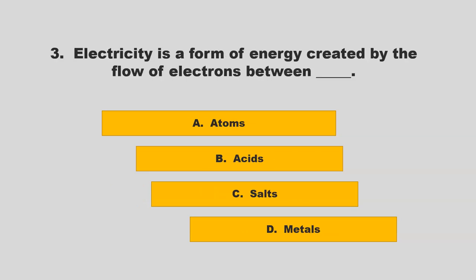Electricity is a form of energy created by the flow of electrons between blank. Is it atoms, acids, salts, or metals? If you chose A, atoms, you are correct.